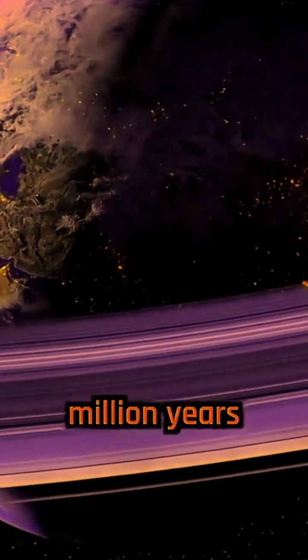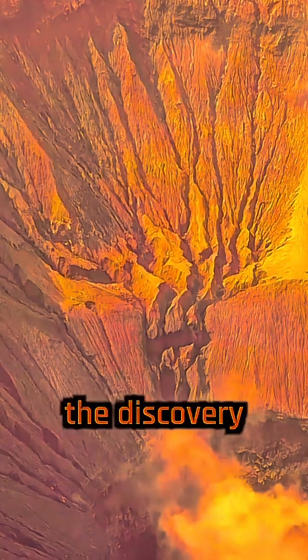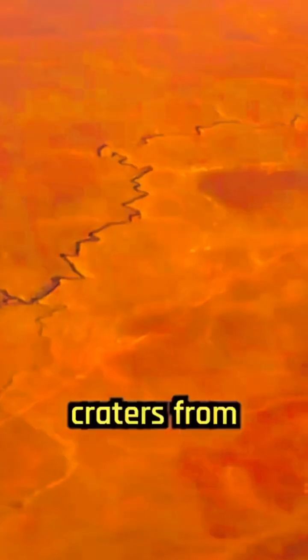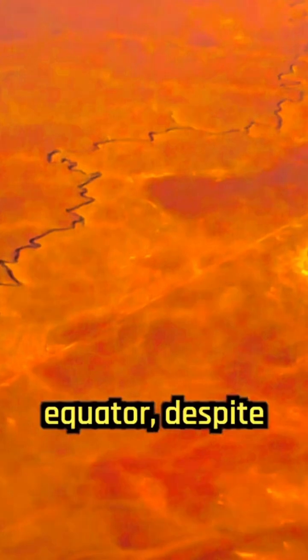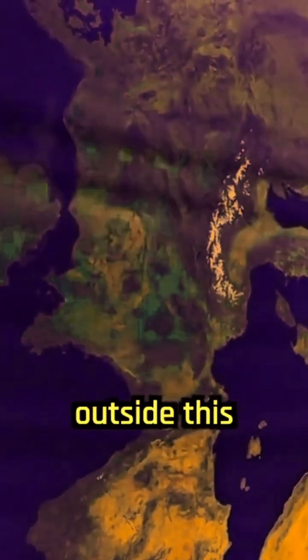Earth may have had a ring system 466 million years ago during the Ordovician period, according to a recent study. This idea stems from the discovery that 21 asteroid impact craters from that time are concentrated near the equator, despite most of Earth's continental crust being outside this region.